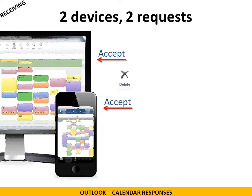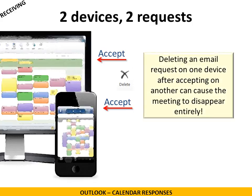A lot of people have two, three, or more devices, so they might accept the request on one device but then get the email on another device and decide to delete it. If you delete it on the second device, it will cause the meeting to entirely disappear. You want to make sure that you either accept on both, or don't bother responding at all on the second one. As long as you've accepted and you do not delete that email, you should be good.